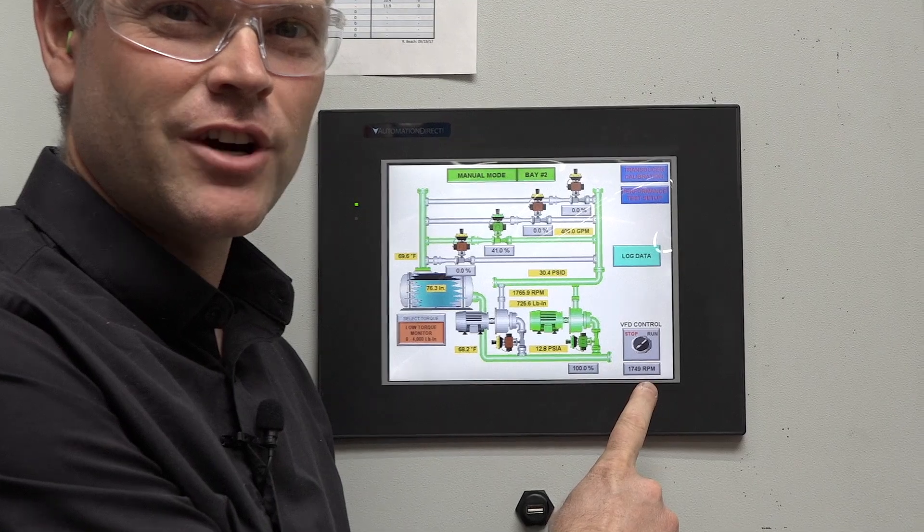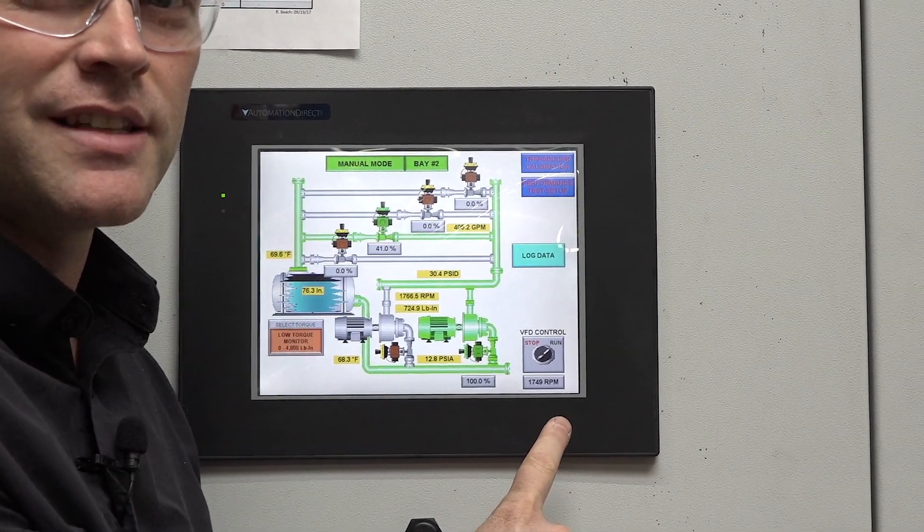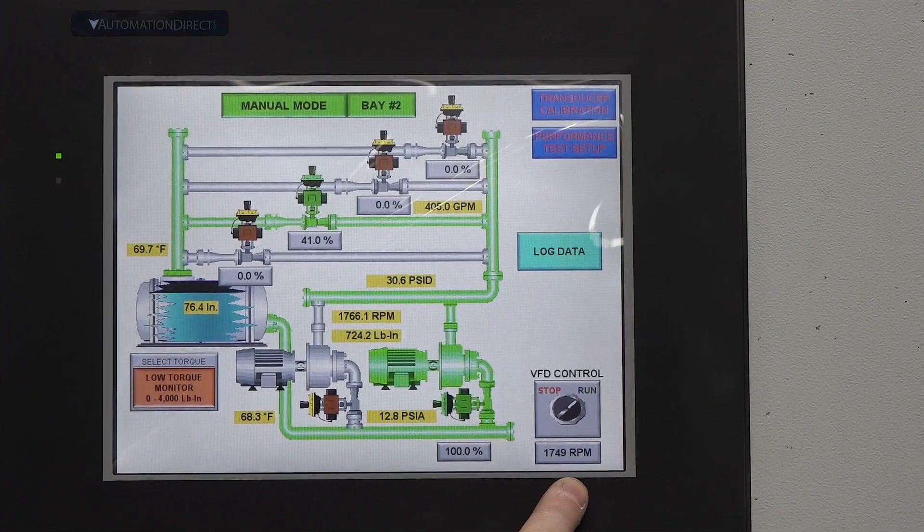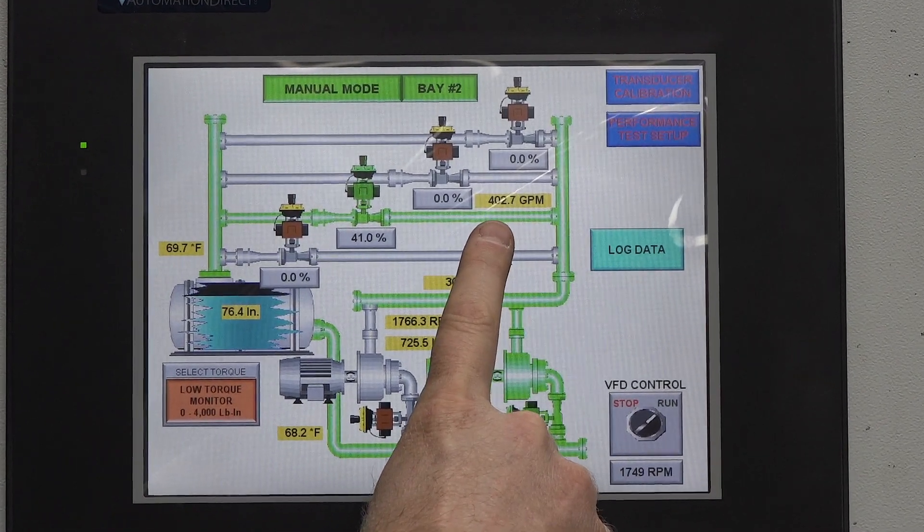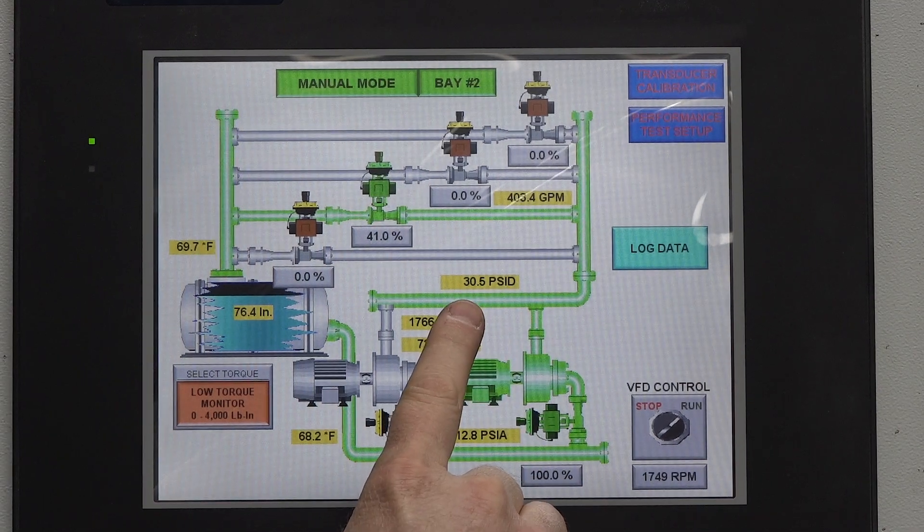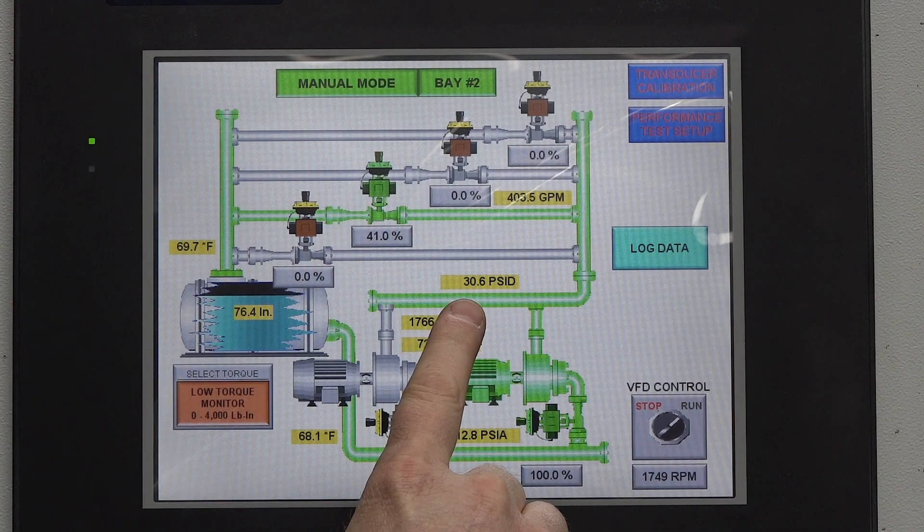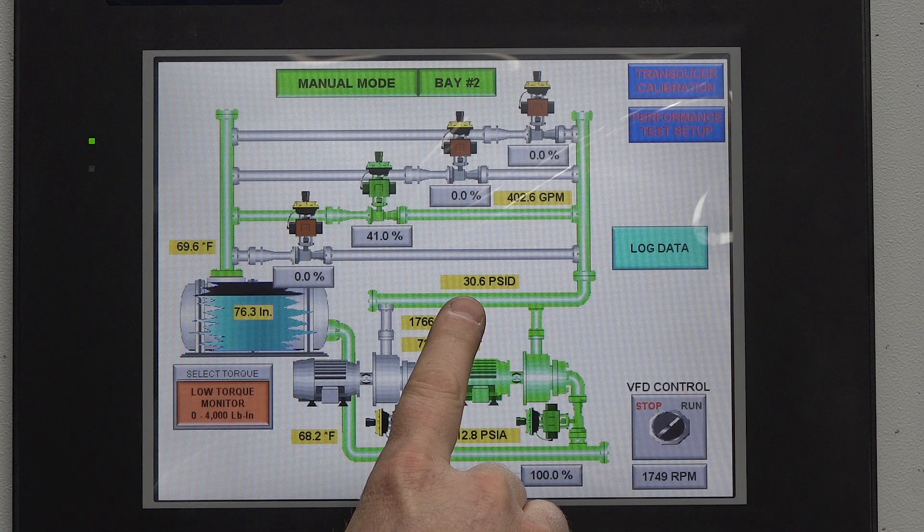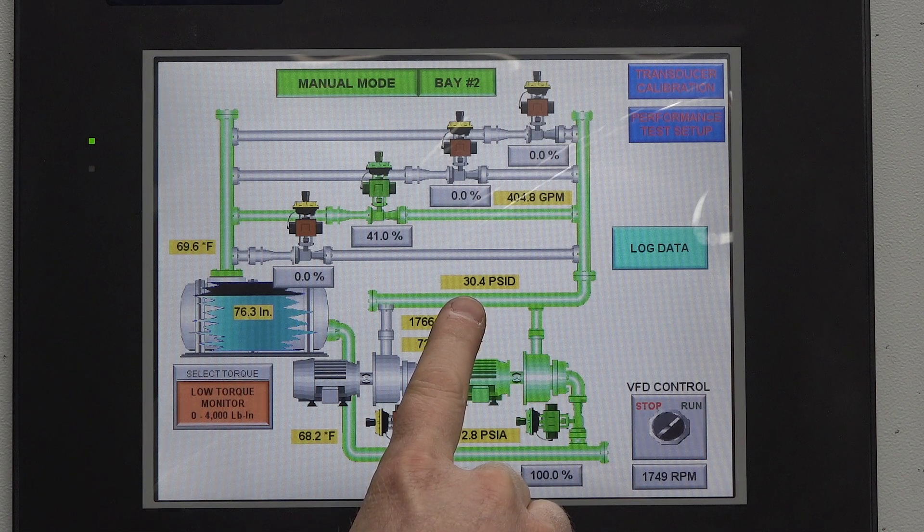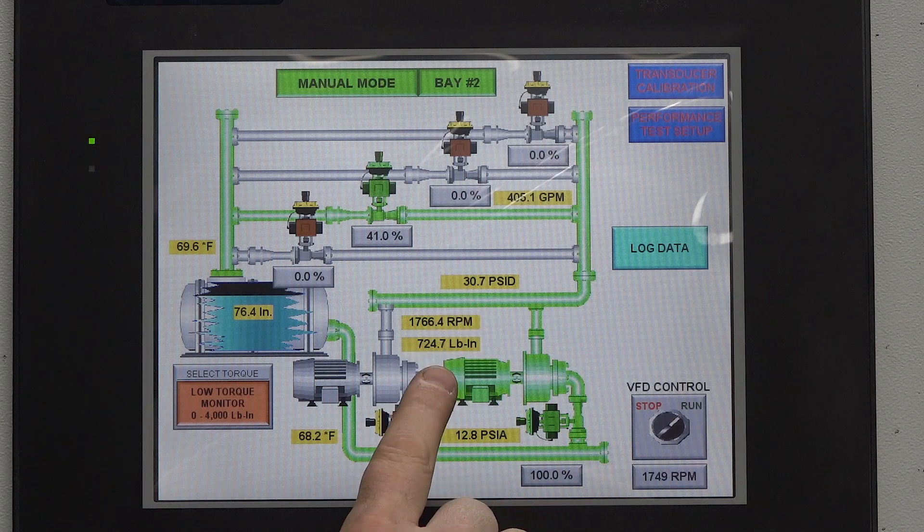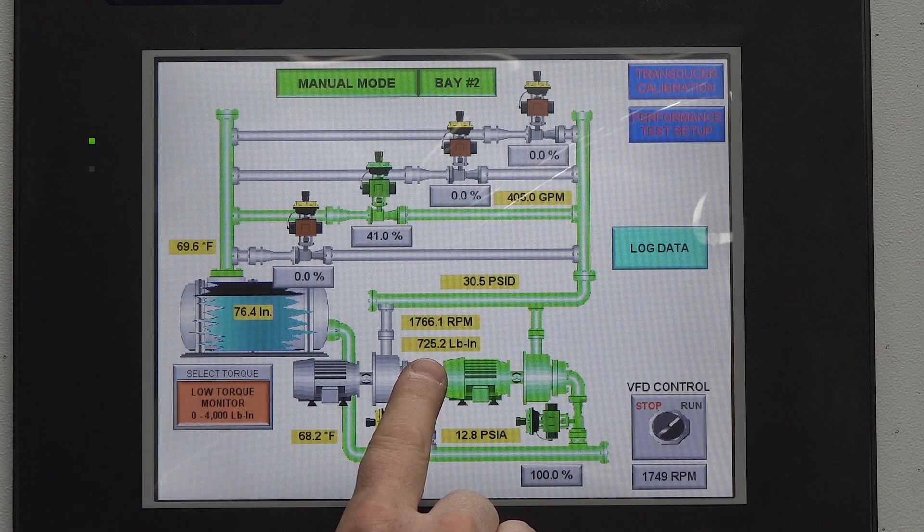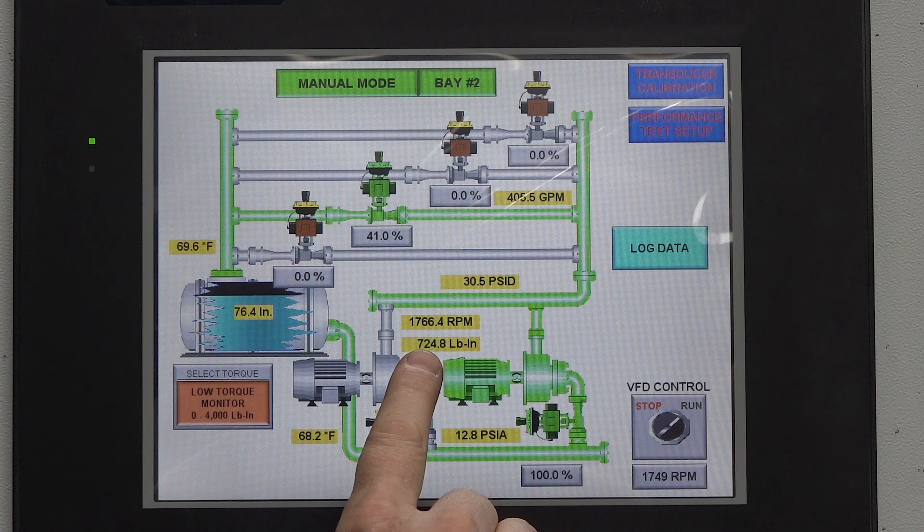For this demonstration we're going to start with the pump operating at 1750 rpm. We're capturing our flow at just around 400 gallons per minute. Our differential pressure is 30.6 psi which is equivalent to 70.6 feet of head. We're then capturing our torque which is calculated to 20.3 horsepower.